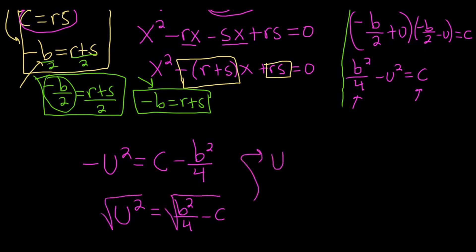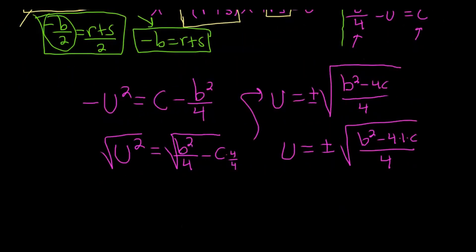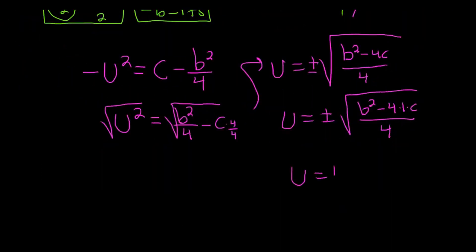That gives us u equals plus or minus square root b squared. Check this out. I'm going to skip the step here. Multiply this by 4/4. Okay, I lied, I'm not going to skip it. Minus 4c over 4. So u is equal to plus or minus square root (b² - 4·1·c)/4. Why did I put the 1 there? That's going to be our a. So this is actually u equals plus or minus square root (b² - 4·1·c). Square root of 4 is 2, so it's really 2 times 1.